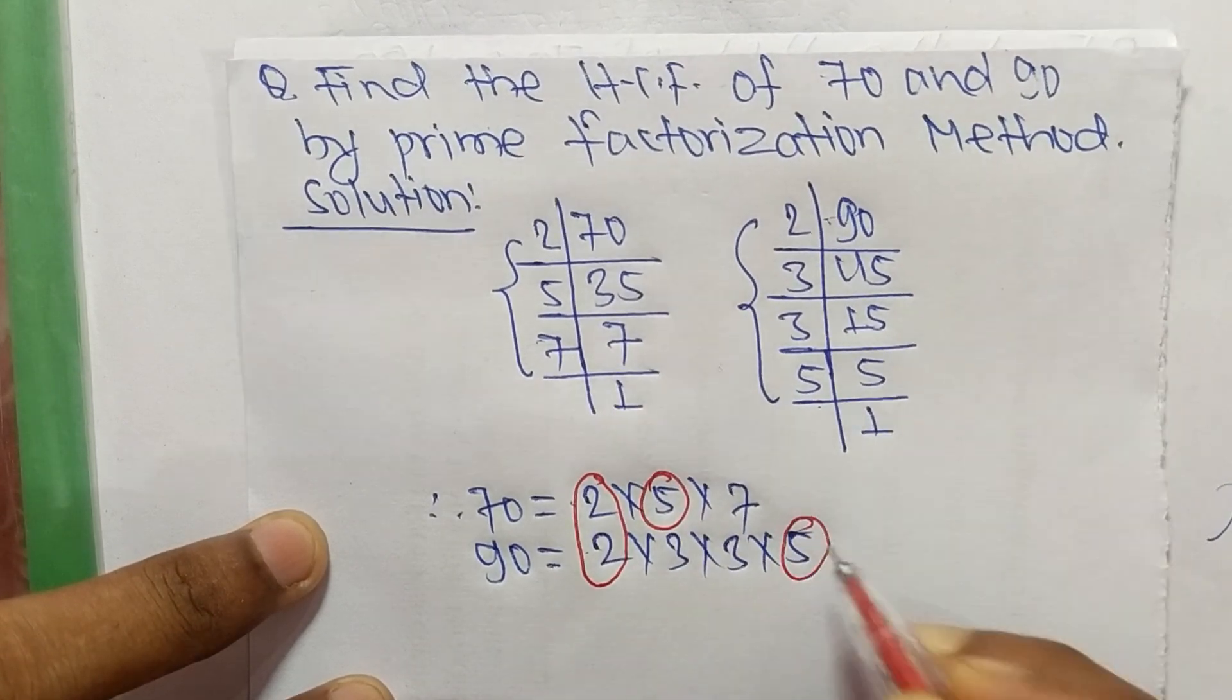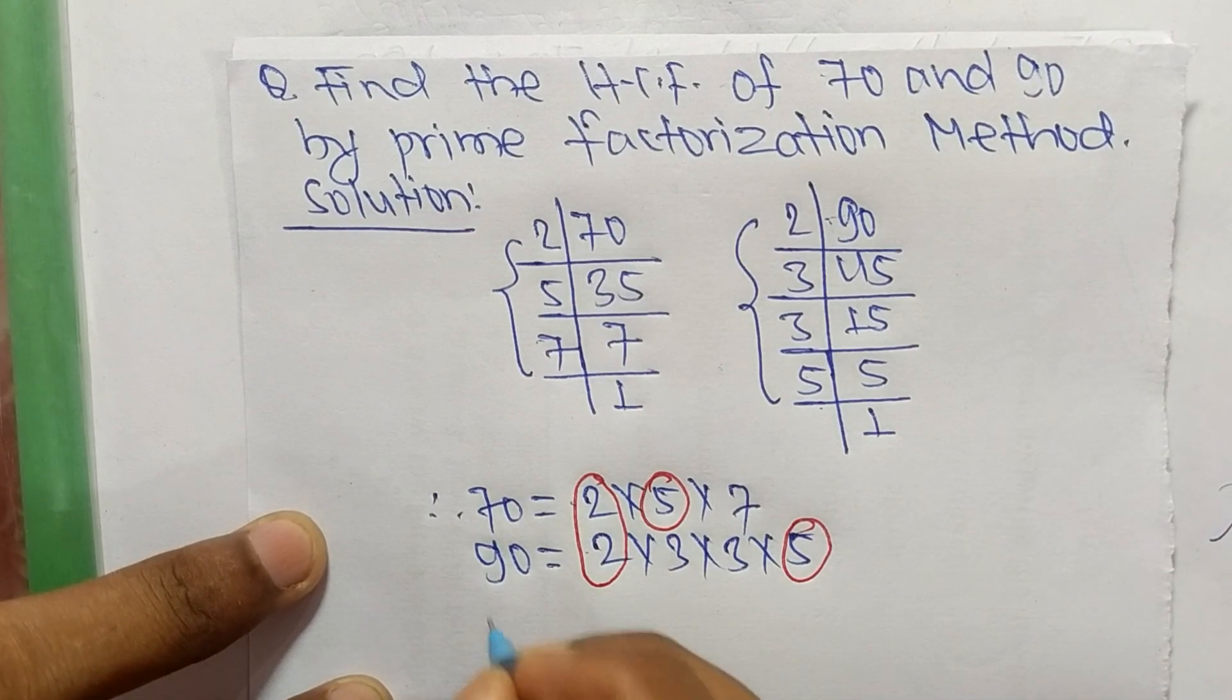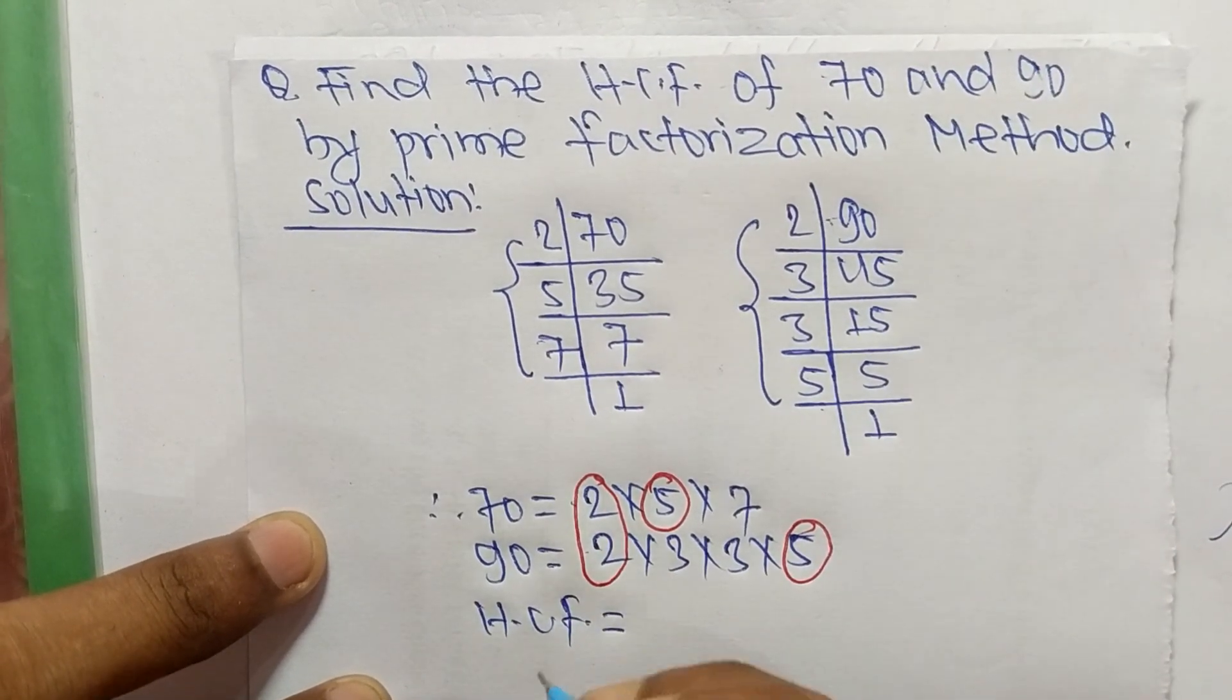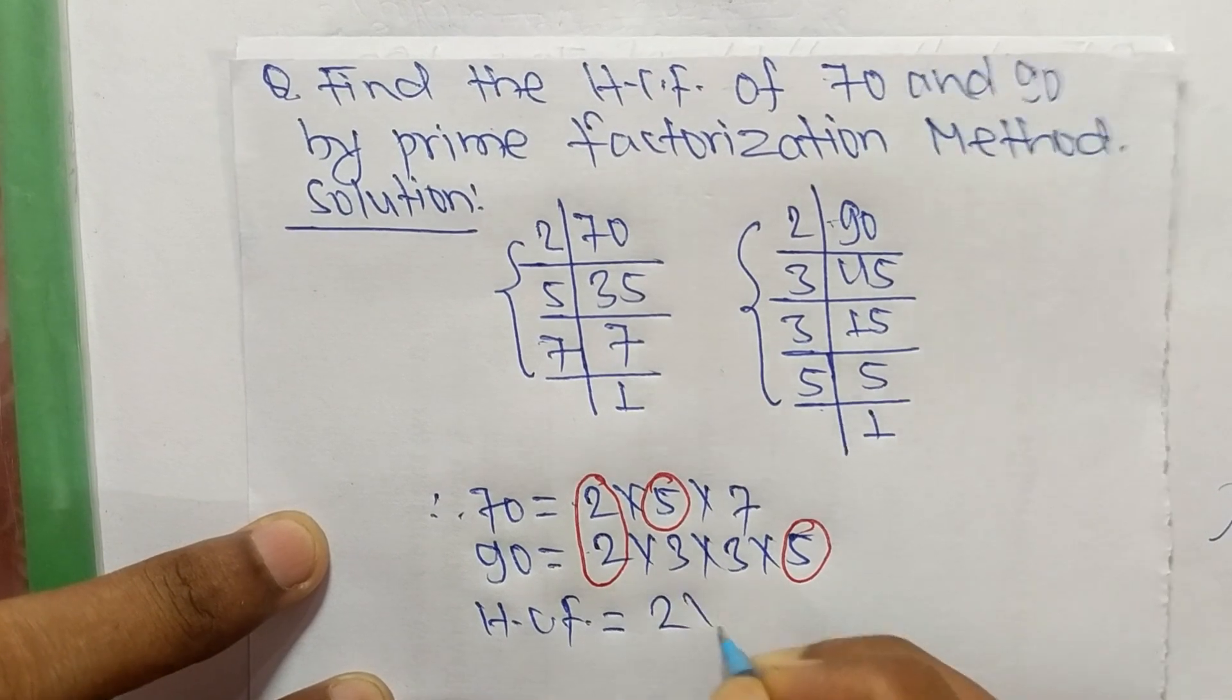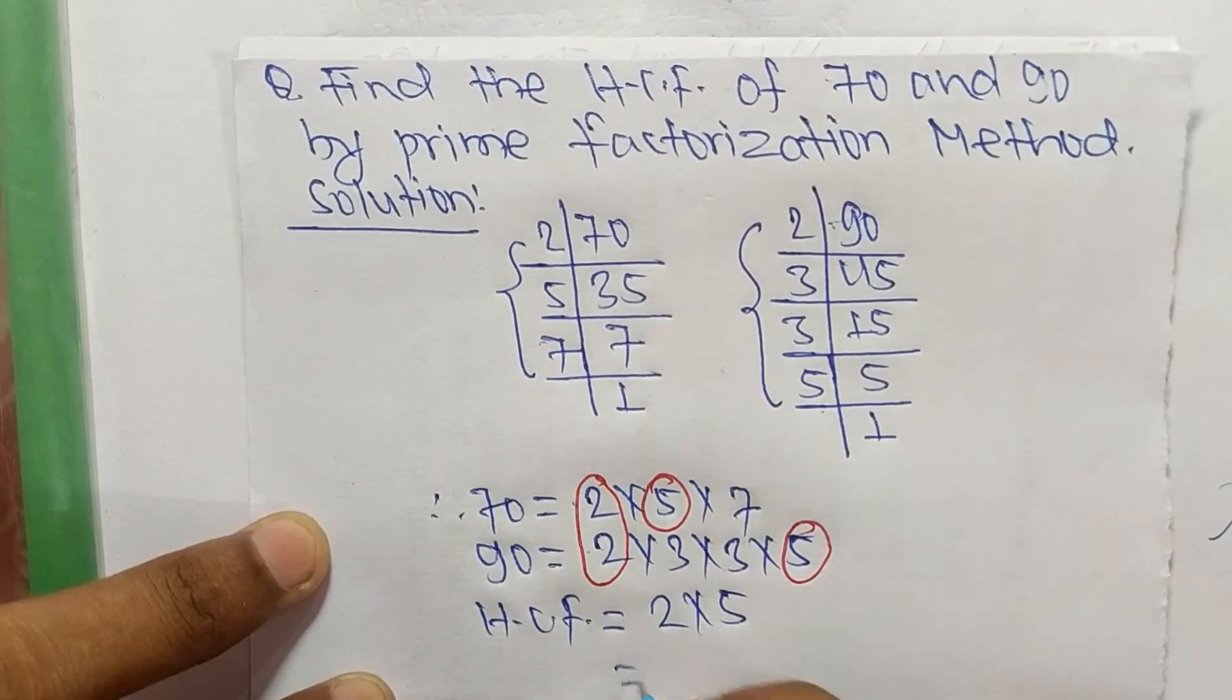So the HCF is equal to the product of common factors which are 2 and 5. So 2 times 5 means it is 10.